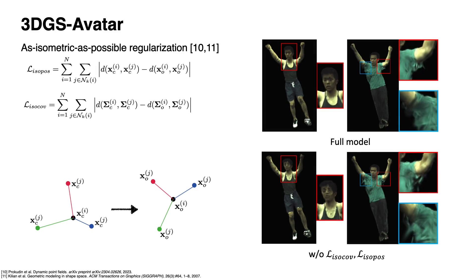Furthermore, we apply as-isometric-as-possible regularization to both Gaussian mean and covariance, which helps maintain the geometric consistency and realistic deformation of the avatar, particularly in dynamic and varied poses.